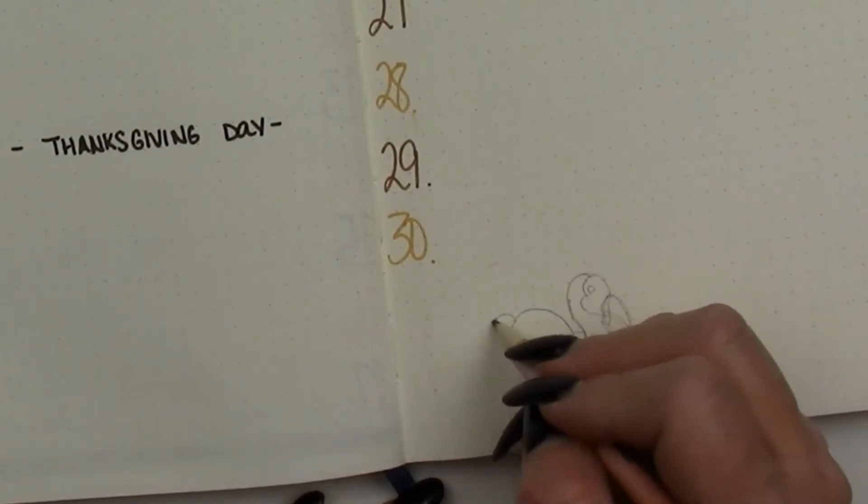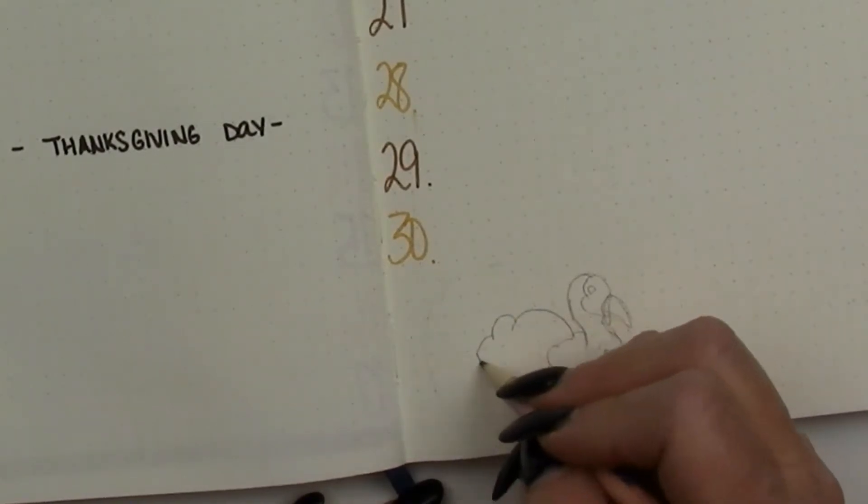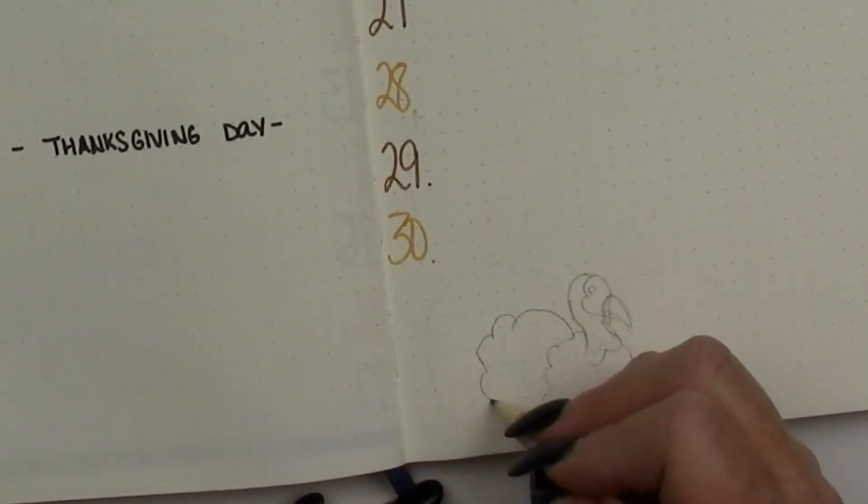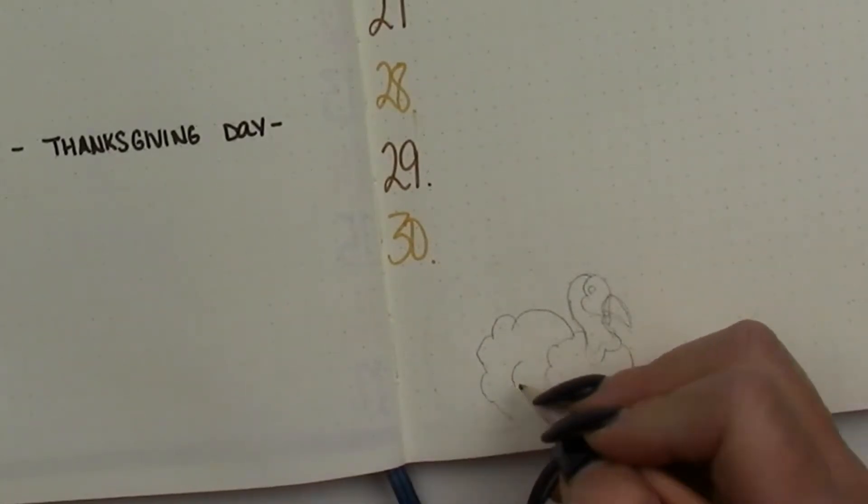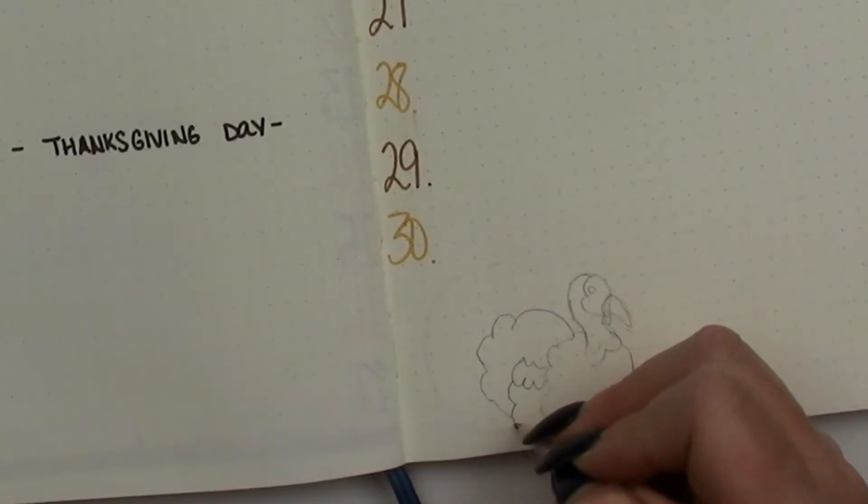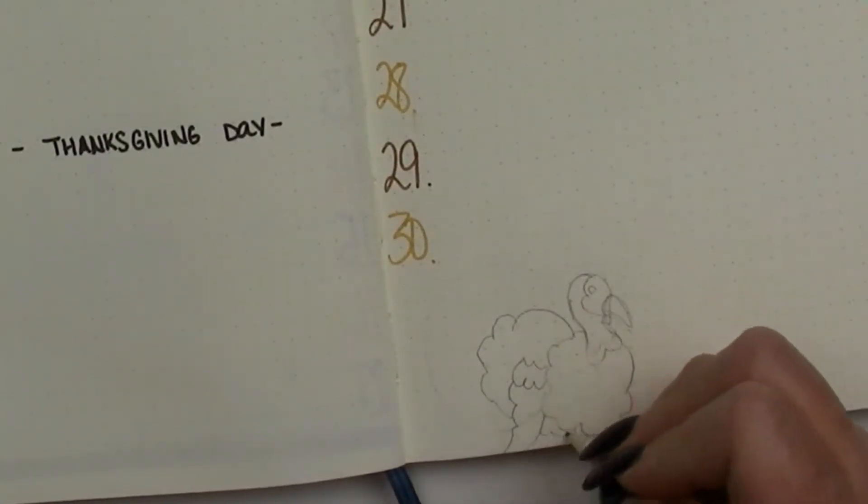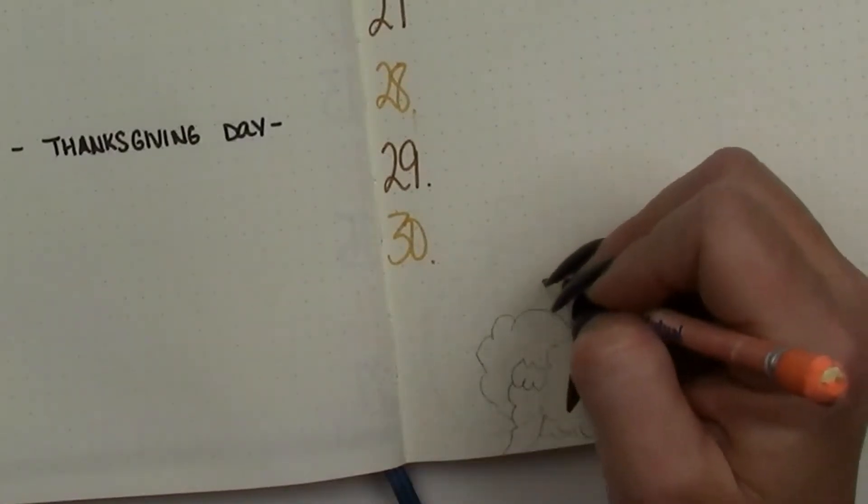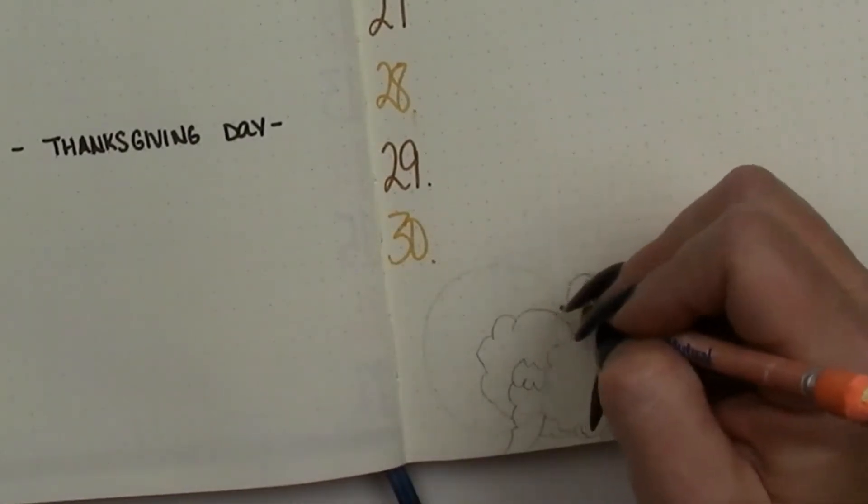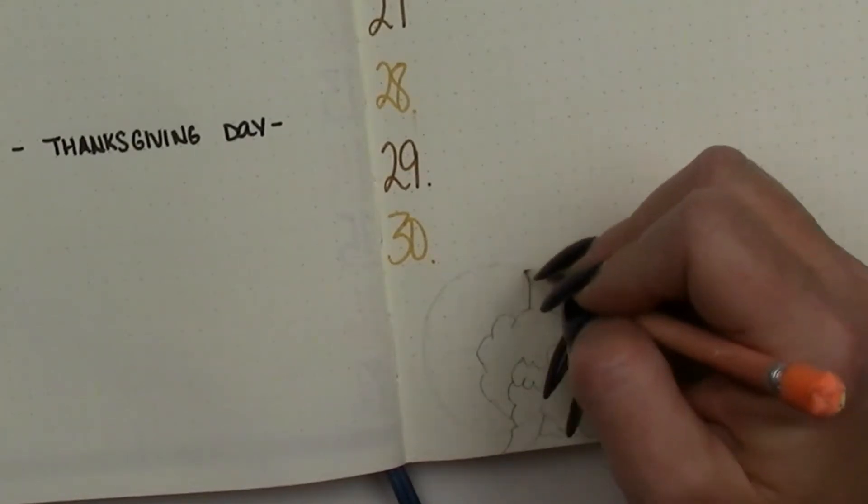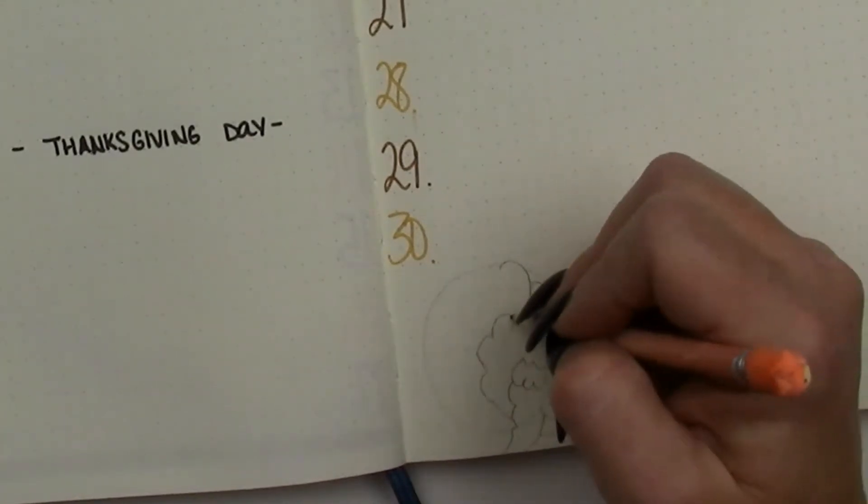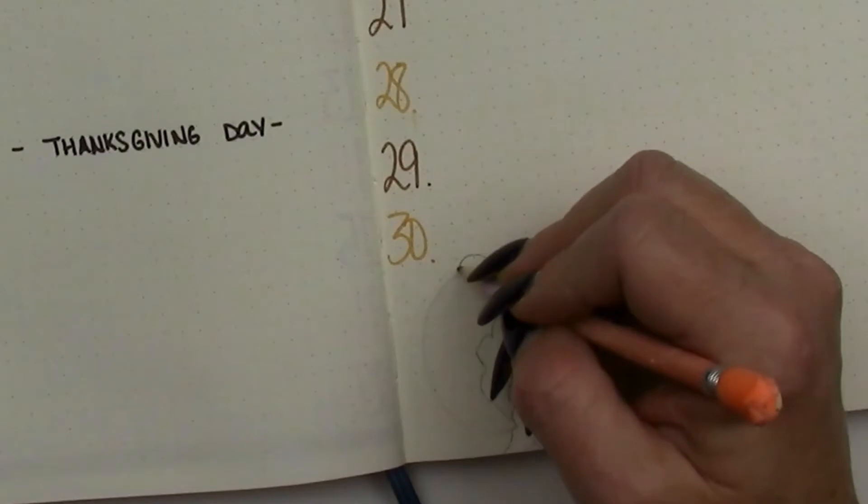And one thing when you're doing a turkey, and I'll show you here in a moment to get the tail fan, fan of the tail, having a circle helps, or an oval rather. So that oval is just to serve as a guide for his tail feathers.